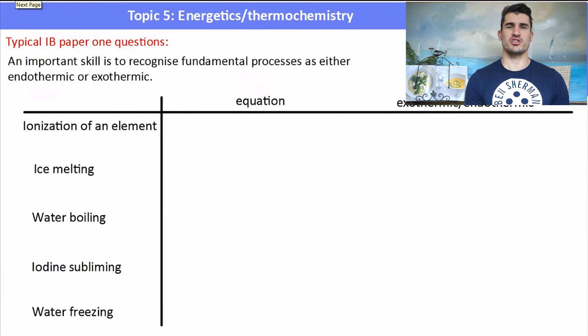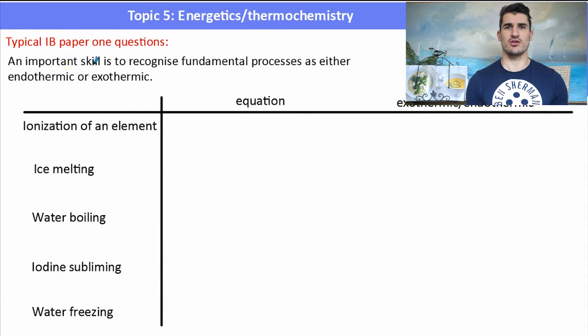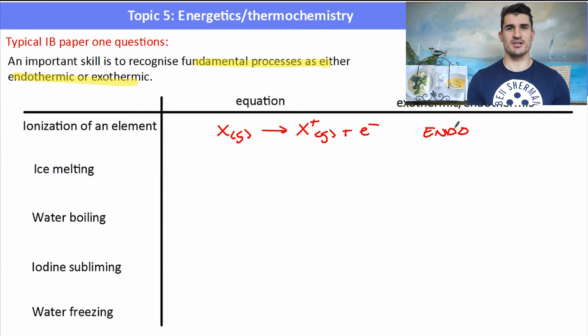A typical kind of paper one question for this kind of exothermic, endothermic is when we have a number of different systems and we need to work out if it's endothermic or exothermic. So ionization. Ionization is when we have an atom in its gaseous state and it forms a gaseous ion and releases an electron. What do we need for that? We need energy. So that must be endo. Ice melting where we have the water as a solid turning into water as a liquid. How can we get that to occur? We have to heat it up. So that's an endothermic process. It absorbs the energy.